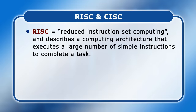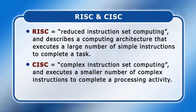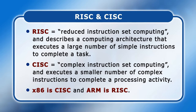RISC stands for reduced instruction set computing and describes a computing architecture that executes a large number of simple instructions to complete a task. An alternative to RISC is CISC, which stands for complex instruction set computing, and executes a small number of more complex instructions to complete a processing activity. Today the difference between RISC and CISC is more blurry than it used to be, but we may still describe the x86 ISA as CISC and the ARM ISA as RISC.